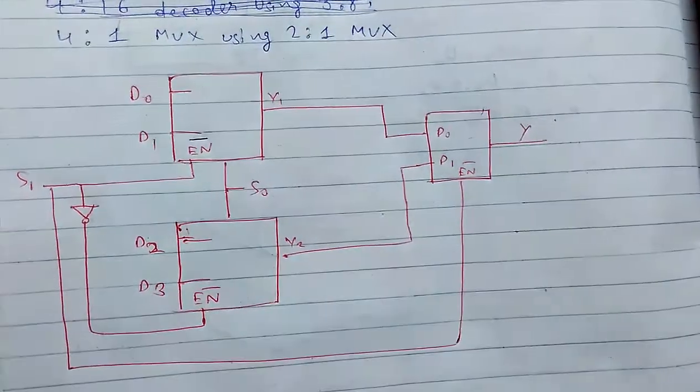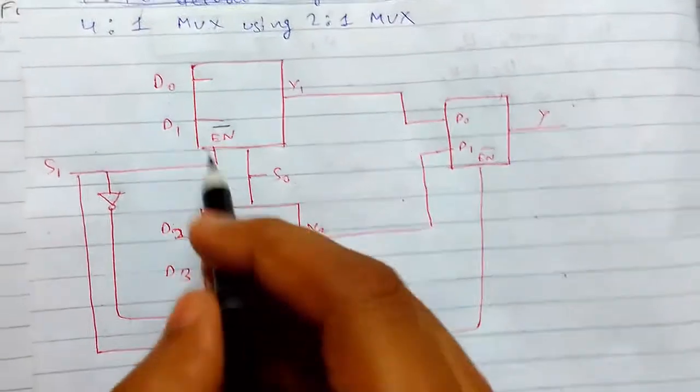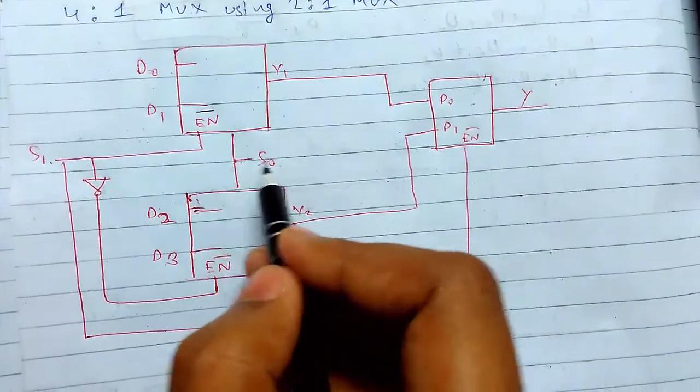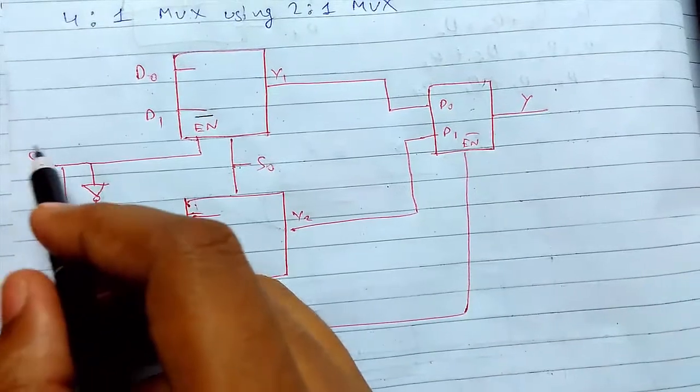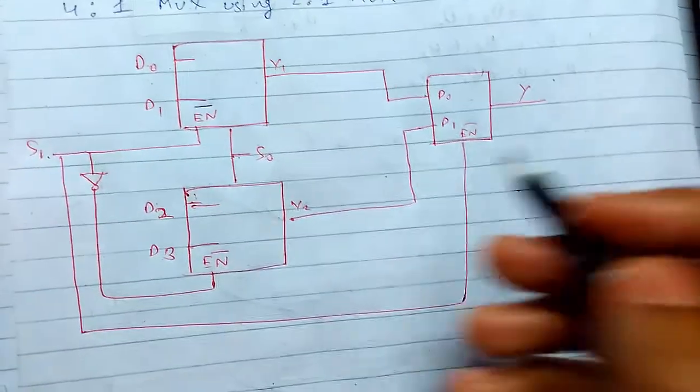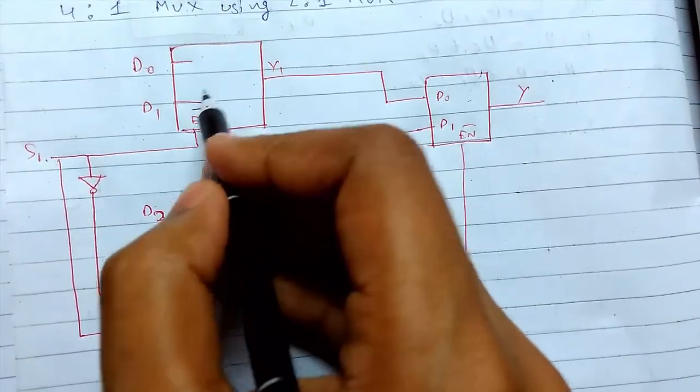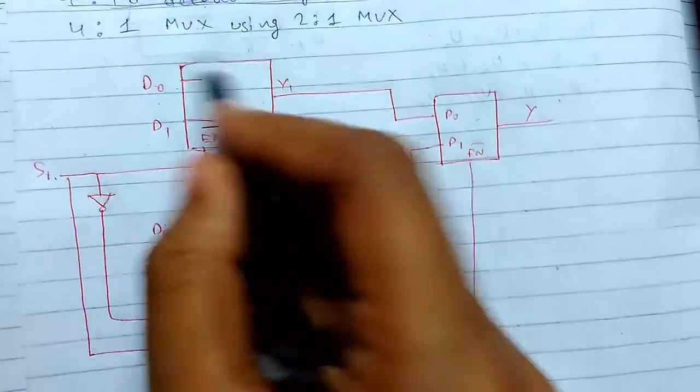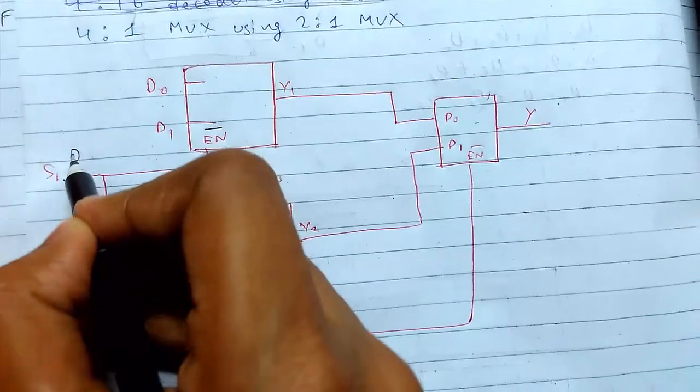This is our selection line. This selection line is sorted because we will use this to vary all the inputs. For the first case, suppose for this mux to activate, we will pass 0 here.